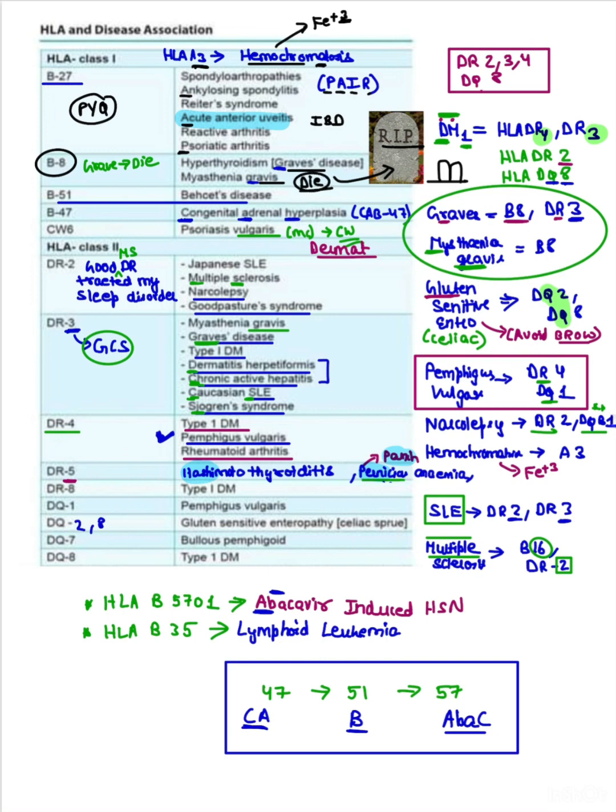This looks like B also, this looks like 8 also. When someone dies, D-I-E is three letters, so it's also associated with DR3. Graves and myasthenia are sorted. Now HLA-B51: B at holy saint. When you are at the holy saint temple, we give money like 51 rupees. B51 you can remember. Behcet's for B and 51 rupees at the holy saint.